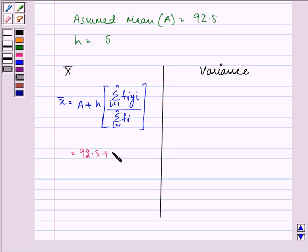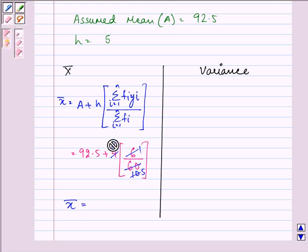So we have 92.5 plus 5 into summation fi yi was 6 divided by summation fi that is 60. So we have on calculation, the value of mean as 93. Sorry here h was 5 not 4.